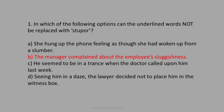Question 1: In which option can the underlined word 'stupor' not be replaced? 'Stupor' means a state of near unconsciousness or insensibility. The sentences are: (a) she felt like waking from a slumber; (b) the manager complained about the employee's sluggishness; (c) he seemed to be in a trance; (d) seeing him in a daze, the lawyer decided not to put him in the witness box. The answer is (b) — 'sluggishness' cannot be replaced with 'stupor.'